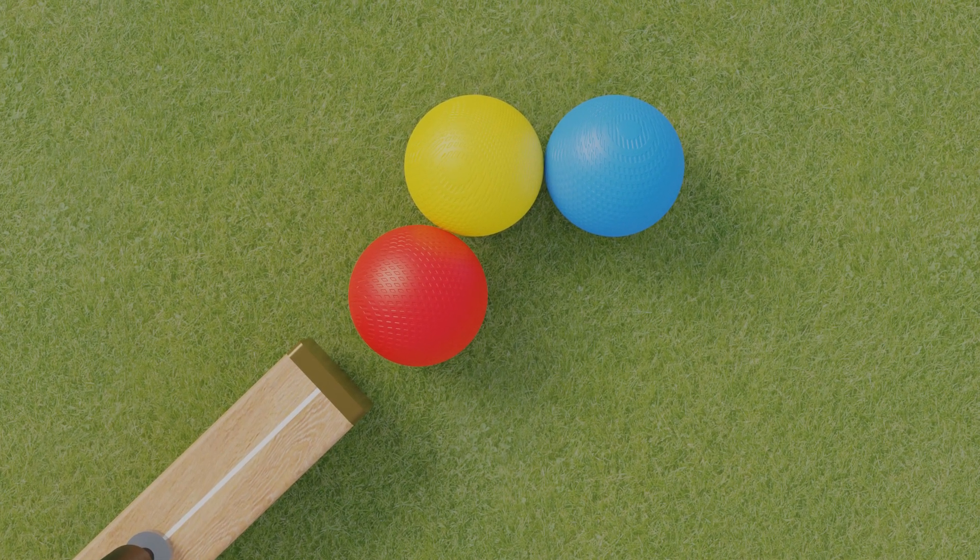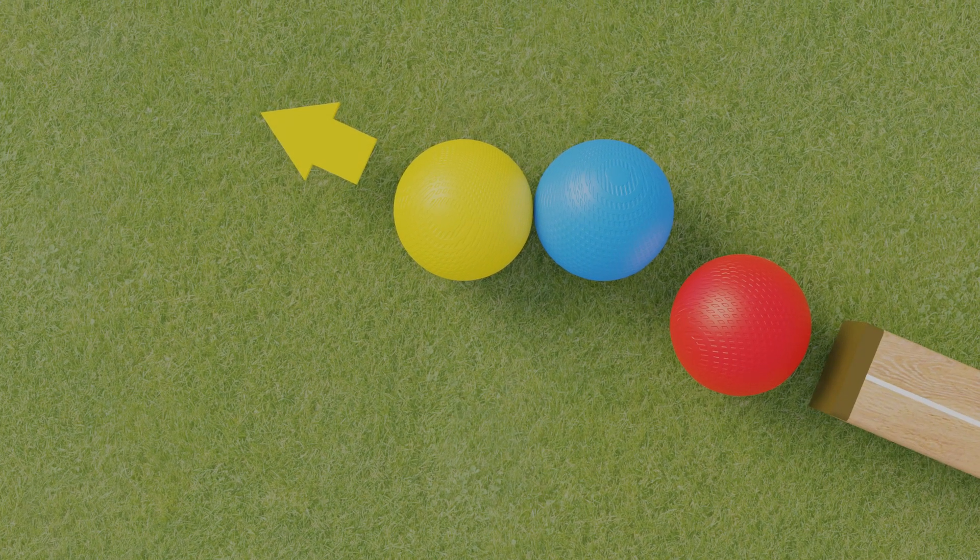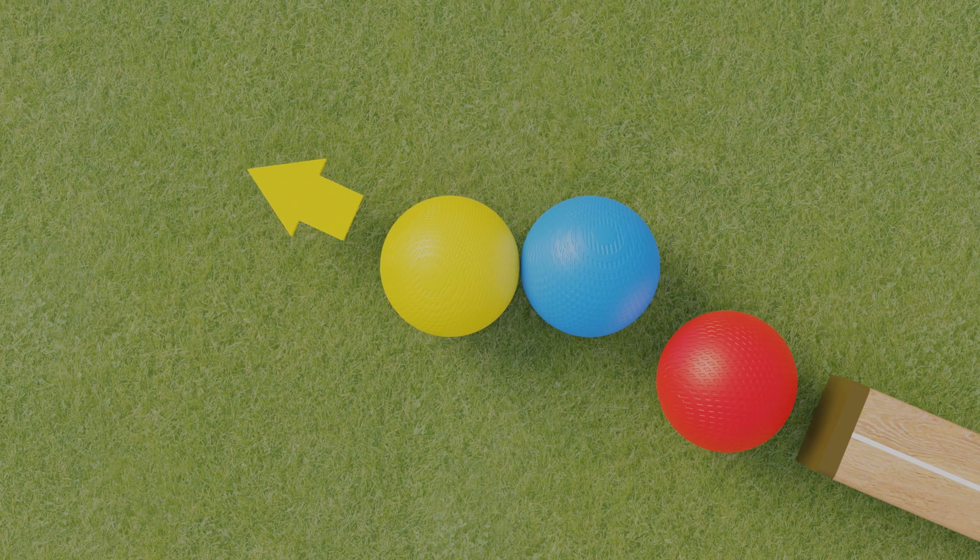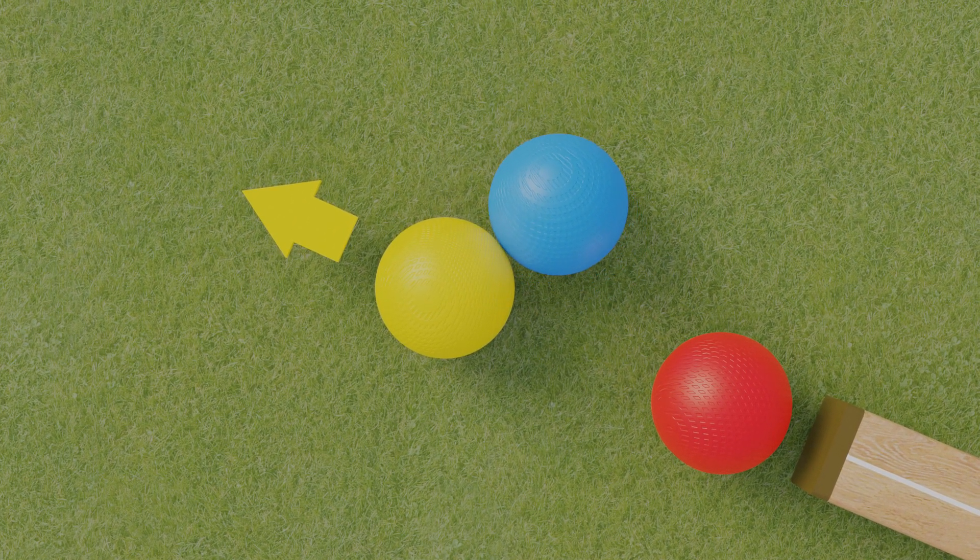The question is how to line things up. If the direction we want to croquet yellow is, let's say, this way, then the blue ball would be in the way. So the rules allow us to move the blue away, as long as it remains touching the yellow.